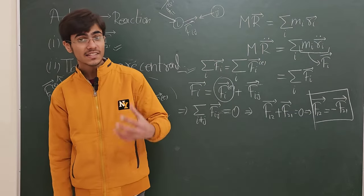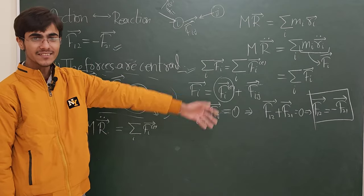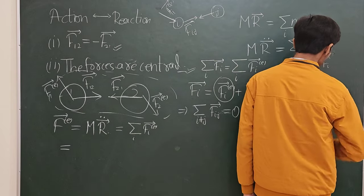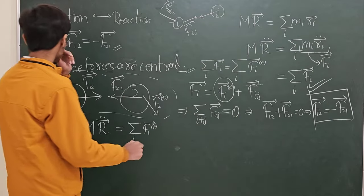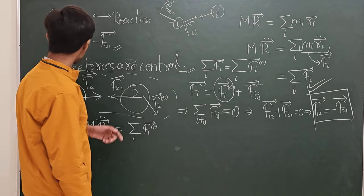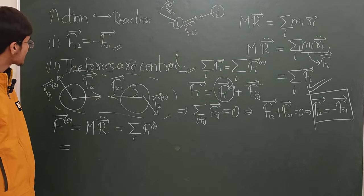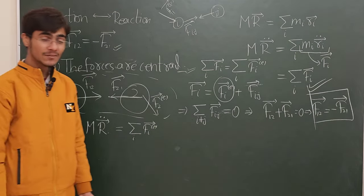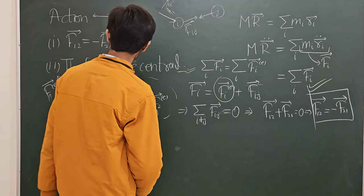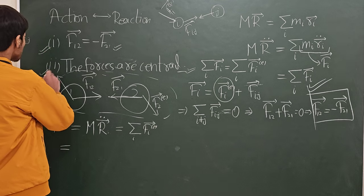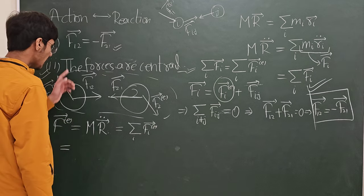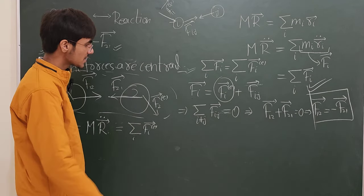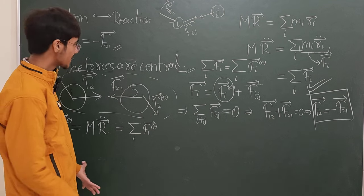Using the concept of center of mass, we have proved Newton's third law of motion. We actually proved what is called the weak form of Newton's third law. The naming conventions don't matter much — what matters is that there are two forms: one says the action-reaction pair exists, and the other says the forces are central.